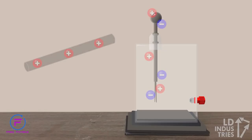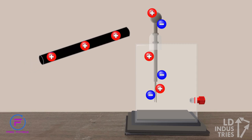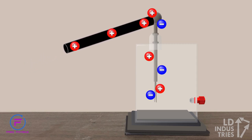What if we try the same thing but with a positive rod? In this case, electrons in the neutral electroscope will be attracted to the positive rod and will move from the electroscope to the rod.